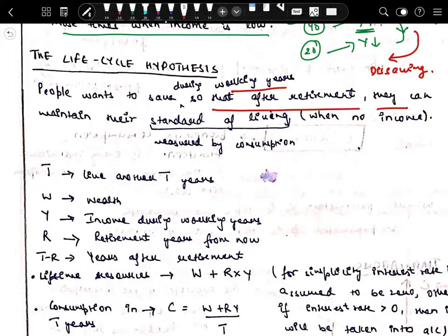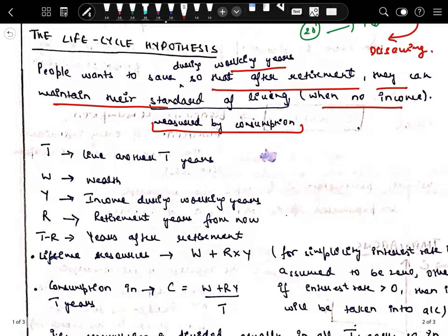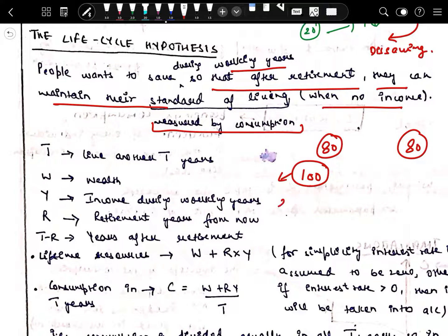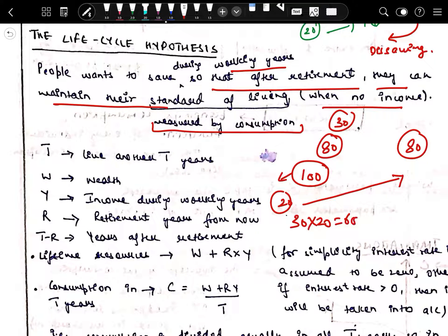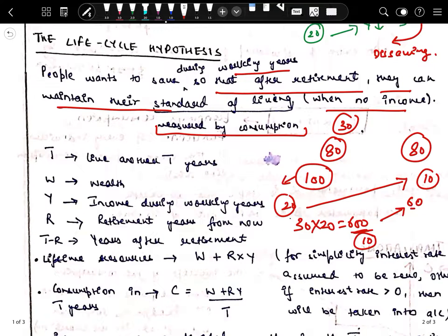People want to save during the working years so that after retirement they can maintain their standard of living. Standard of living here is defined on the basis of consumption. Suppose an individual consumes 80 rupees every year; he wants to keep consuming around 80 rupees even after retirement. His income during working life is 100 rupees, so he saves 20 rupees every year. If he works for 30 years, he accumulates 30 × 20 = 600 rupees. If he is alive for 10 years after retirement, he can consume 60 rupees per year, which is close to his earlier 80 rupees consumption.